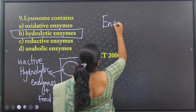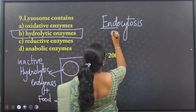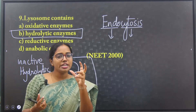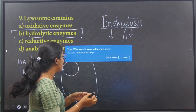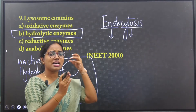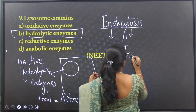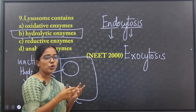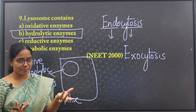Endocytosis means any material which is entering inside the cell. Whatever material exits the cell — the undigested waste material — that process is called exocytosis. In this process, the very important cell organelle is lysosome, which performs digestion with the help of hydrolytic enzymes.